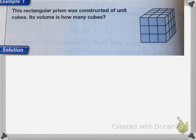You can see that there are three layers of cubes: 1, 2, 3. Each layer contains 3 rows of cubes, so 1, 2, 3 rows, and 4 cubes in each row: 1, 2, 3, 4.